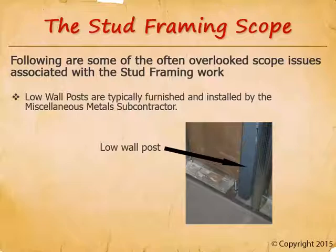Here's the best solution for hard bid projects: when you see a low wall that needs a steel post but it's not shown on the drawings, send a pre-bid RFI to the architect asking if low wall posts are necessary for those freestanding walls. The architect will respond and send that response to every other bidder, ensuring all competitors include these items. This levels the playing field, and architects appreciate it because they don't like change orders either.